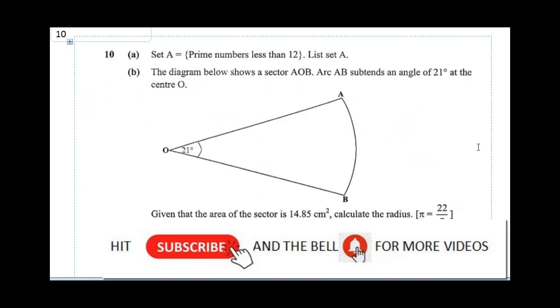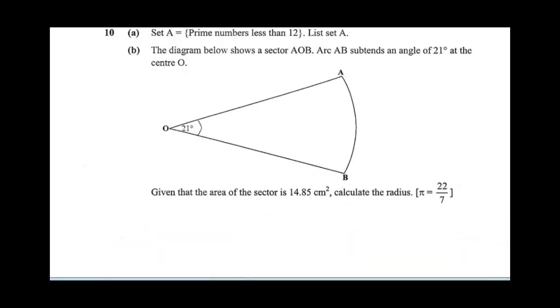Question 10 says set A equals prime numbers less than 12, list set A. To list set A, A will be the set of prime numbers less than 12: 2, 3, 5, 7, and 11. So these are the prime numbers less than 12.